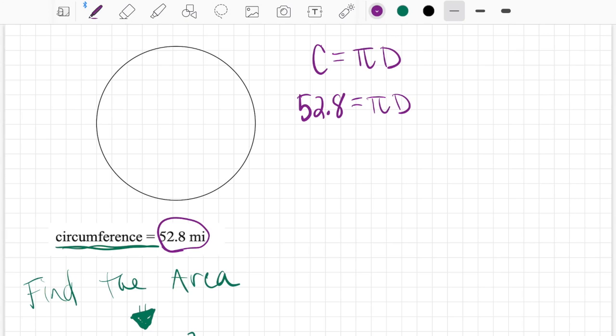If I want the diameter to be on its own, we got to get rid of this pi. So we're going to divide both sides by pi. Pi divided by pi cancels out. And so then we have 52.8 divided by 3.14 for pi, and that's going to give us 16.82 miles. So we just figured out the diameter is 16.82 miles.